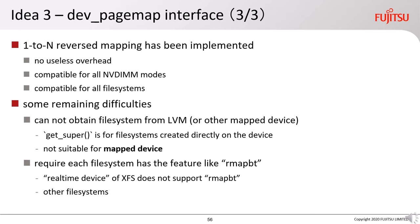There are some remaining difficulties. The first is that the PMEM driver cannot obtain the file system from LVM or other mapped devices — we can use getSuper to get the file system created directly on the device, but it is not suitable for mapped devices, so another method needs to be found. The second is that storage_lost requires the file system to have a feature like RMAP v3 to track owners from the block. For example, the real-time device of XFS doesn't support it, so we cannot track for the real-time device for now, and the same applies to other file systems.